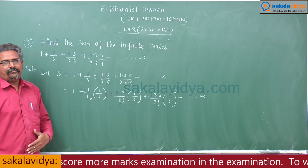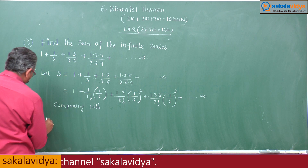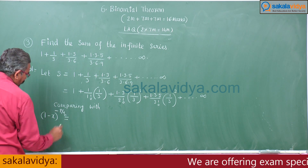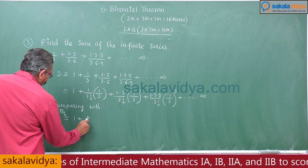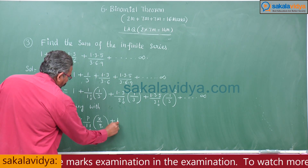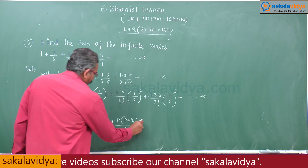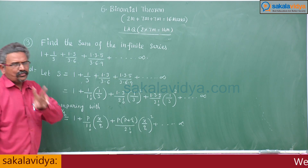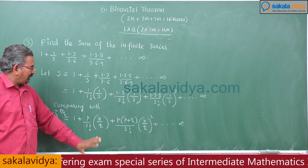Comparing with the standard formula: (1 − x)^(−p/q) = 1 + p/(1!) · (x/q) + p(p+q)/(2!) · (x/q)² + ... Compare term by term — two or three terms are enough.